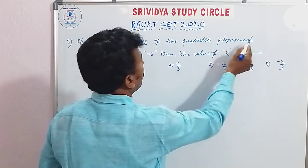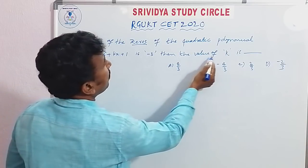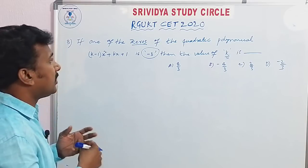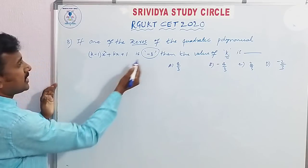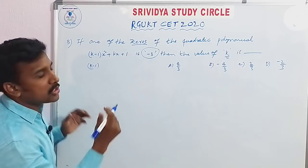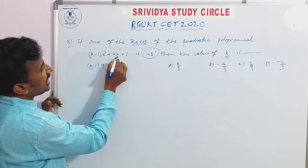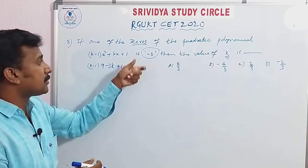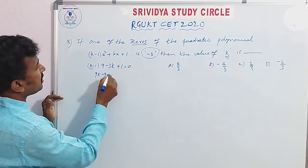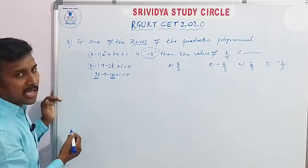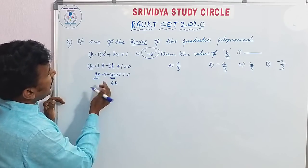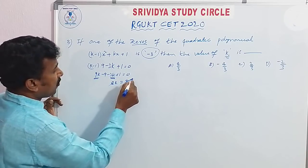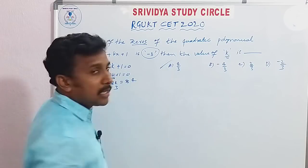Now third problem: if one of the zeros of the quadratic polynomial k minus 1 times x squared is equal to something and one zero is minus 3, then find the value of k. One of the zeros means substitute x equals minus 3. So: k minus 1 times (minus 3) squared minus 3 times k minus 3 plus 1 equals 0. That gives 9(k minus 1) minus 3k plus 1 equals 0, so 9k minus 9 minus 3k plus 1 equals 0, giving 6k equals 8, so k equals 4 by 3.